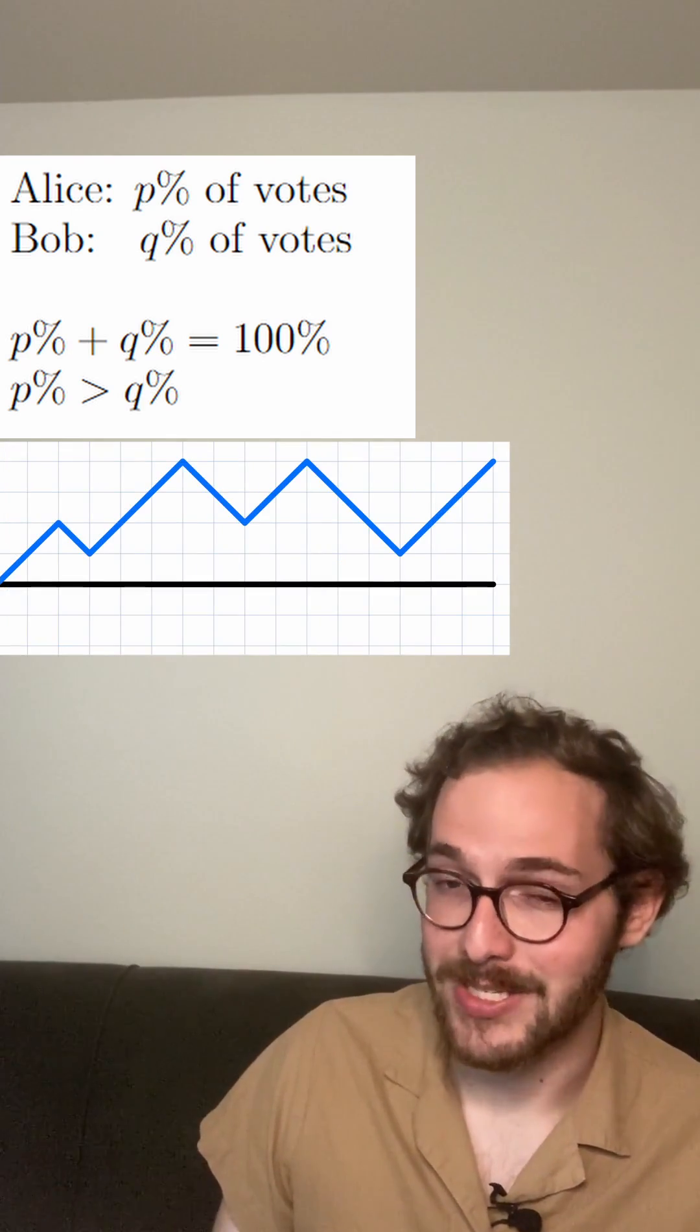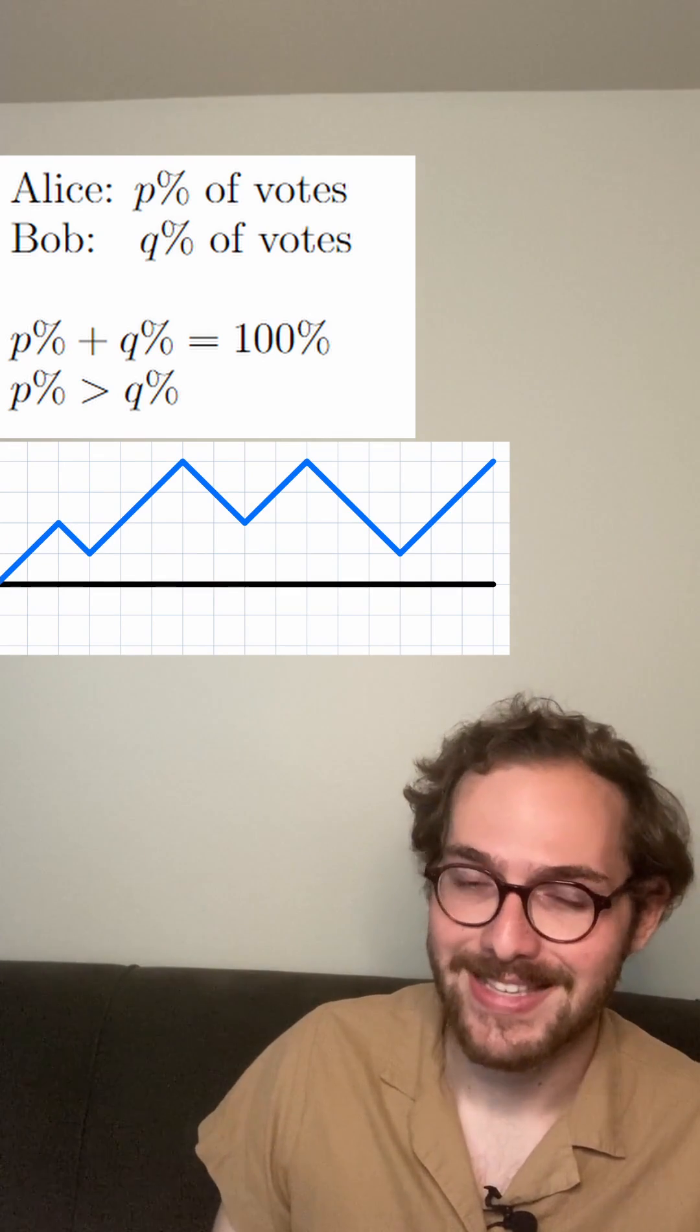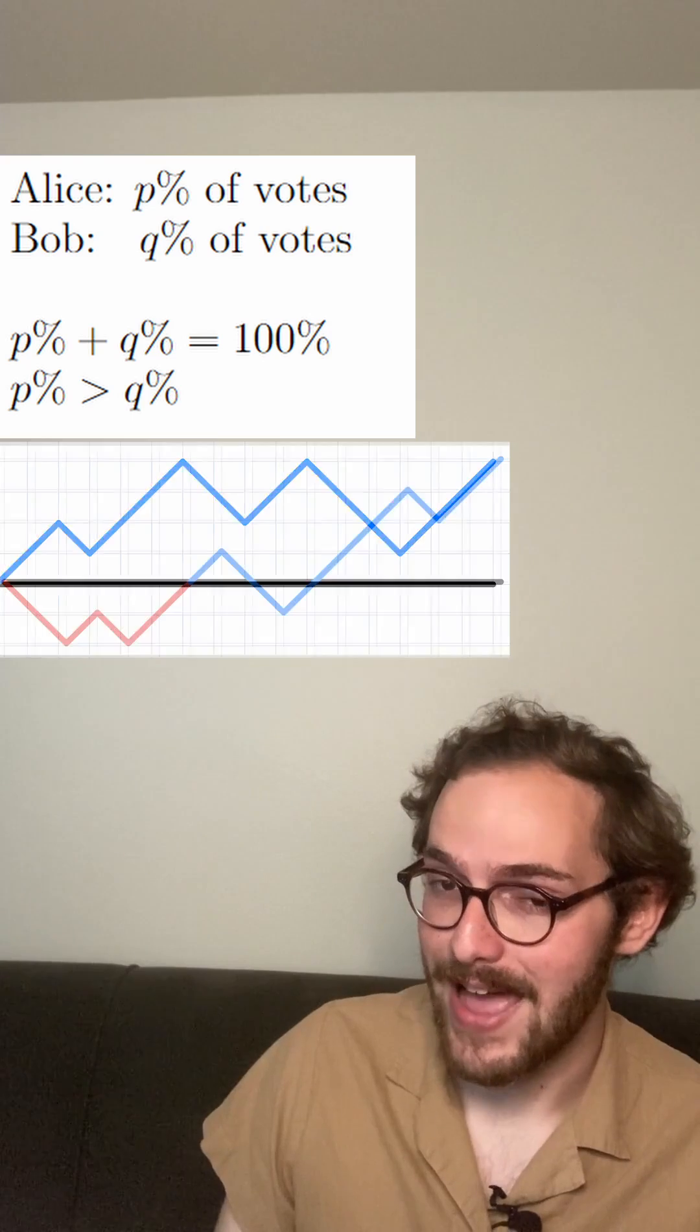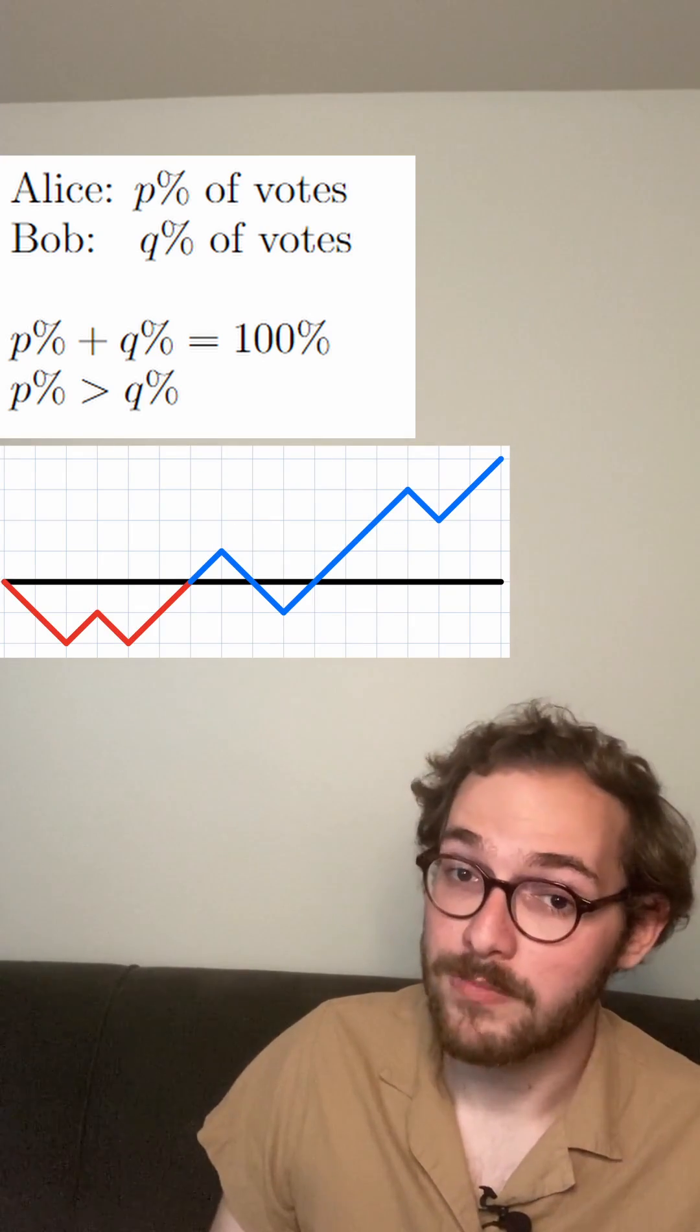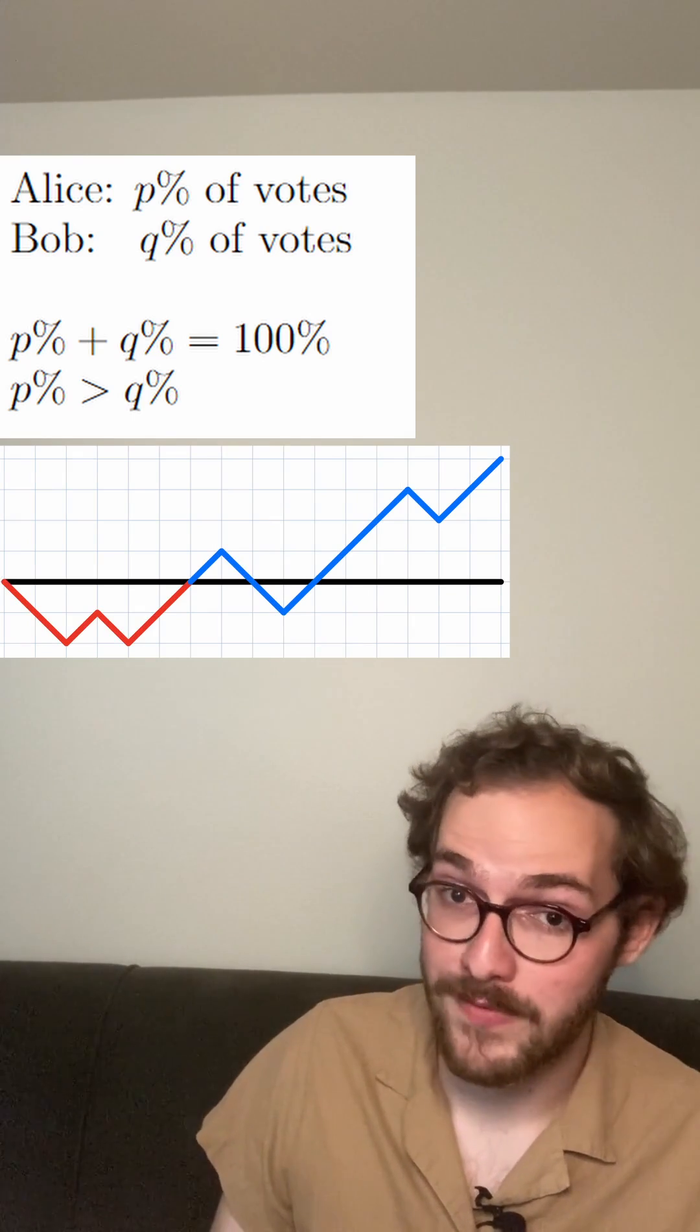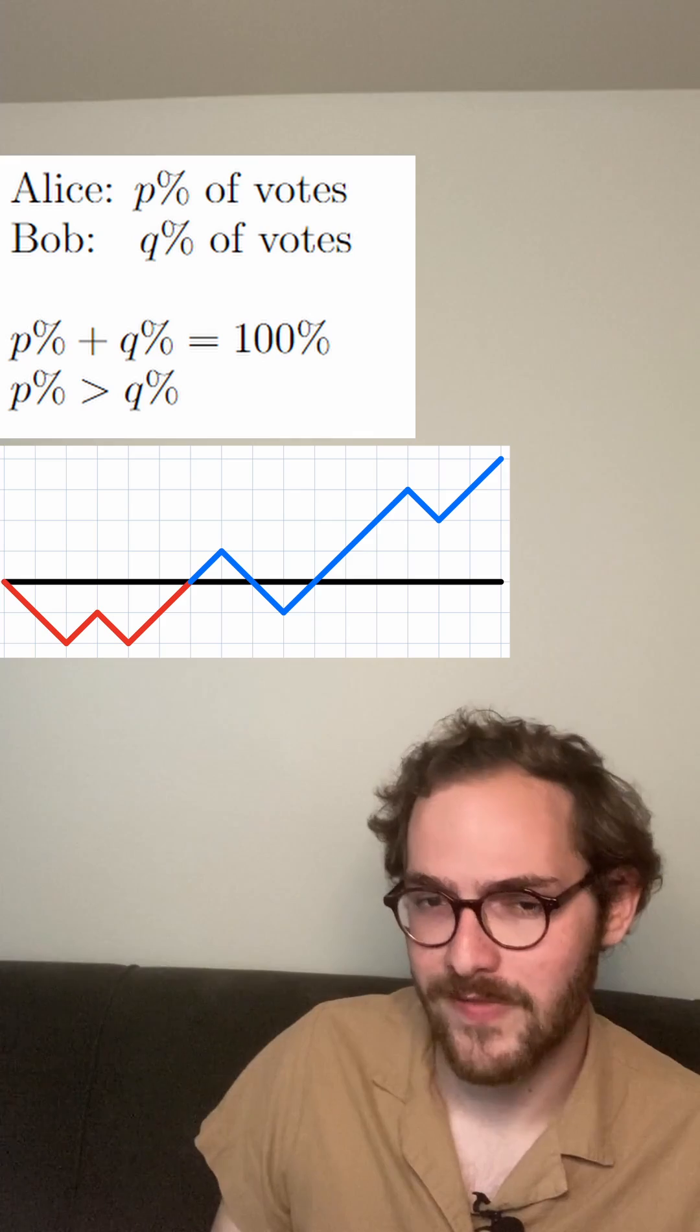The good paths, that is, paths where Alice is always winning, stay above the x-axis, and the bad paths at some point touch the x-axis. We want the proportion of good paths, or equivalently, one minus the proportion of bad paths.